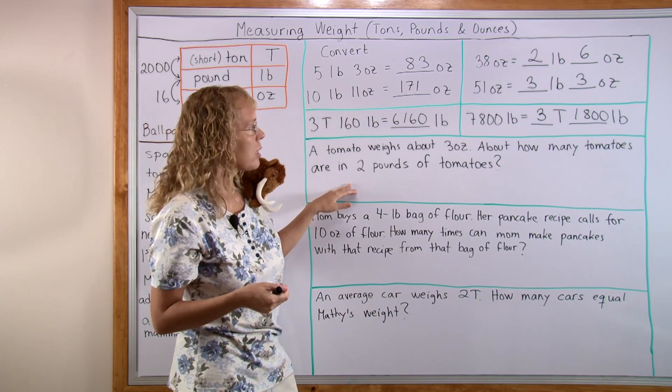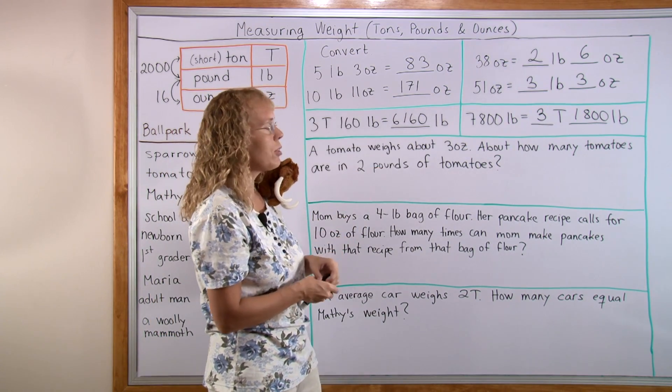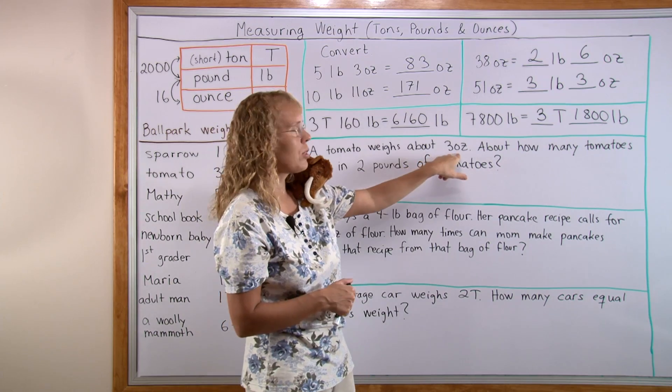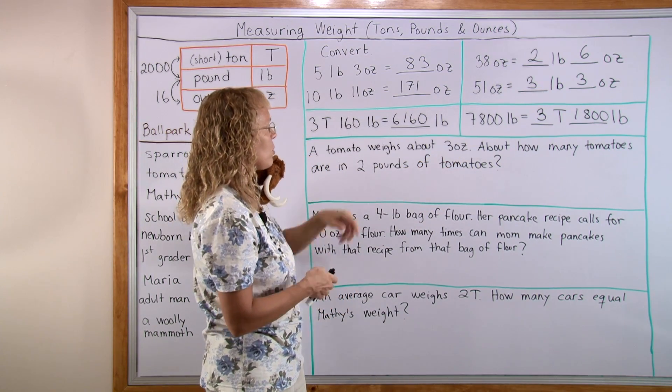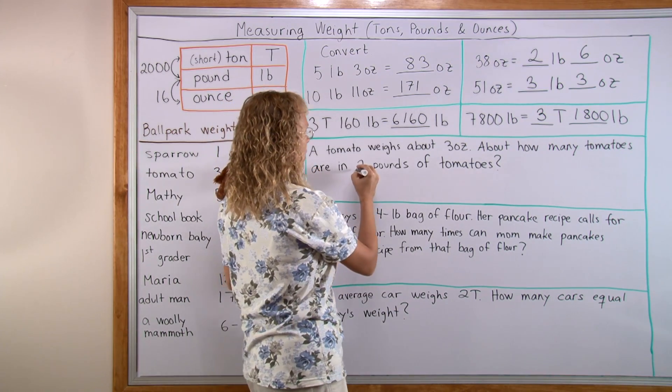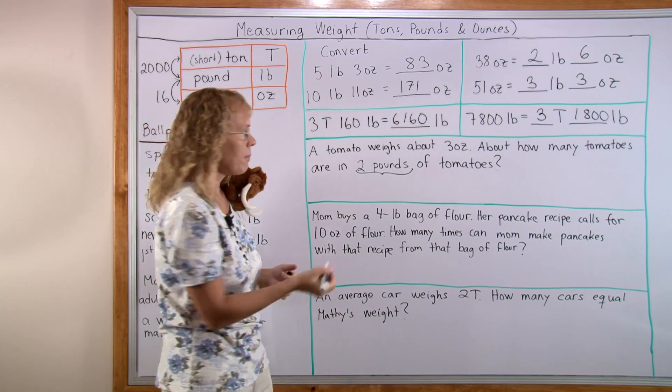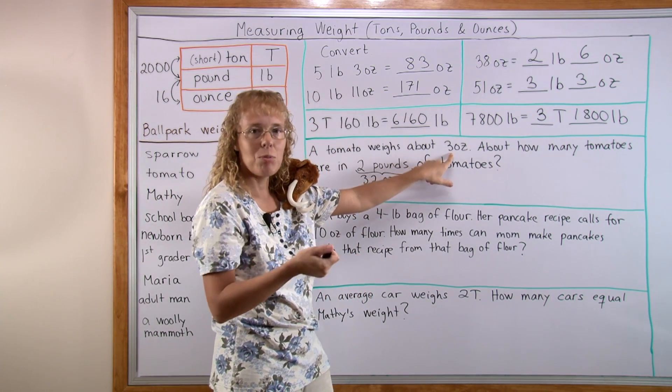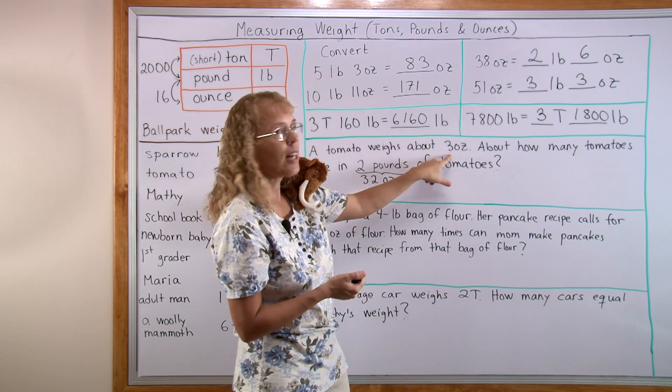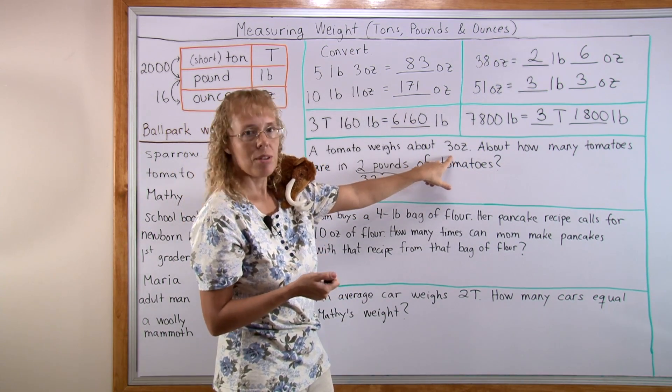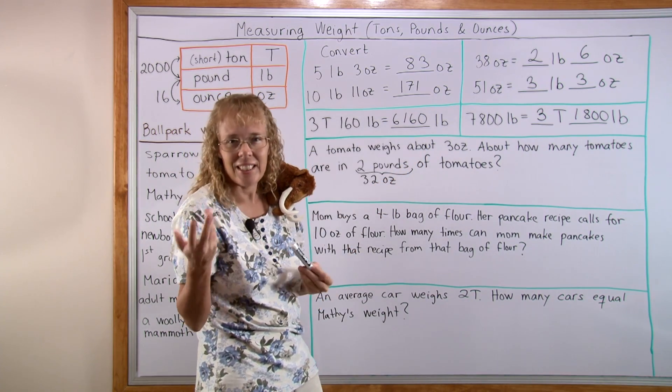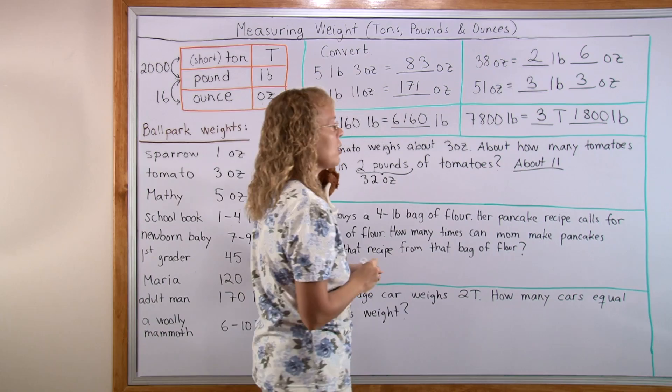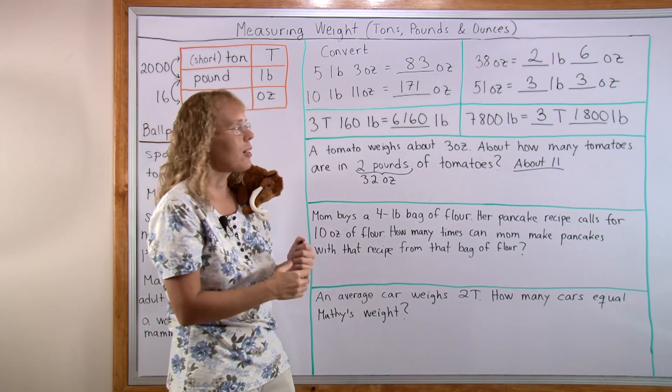A tomato weighs about 3 ounces. About how many tomatoes are in 2 pounds? We could change pounds to ounces or vice versa, but it's easier to change 2 pounds to ounces: 2 times 16 equals 32 ounces. How many times does 3 go into 32? 10 times 3 is 30, 11 times 3 is 33. So about 10 or 11 tomatoes—I'll answer about 11, though it could be 10 since tomatoes vary.